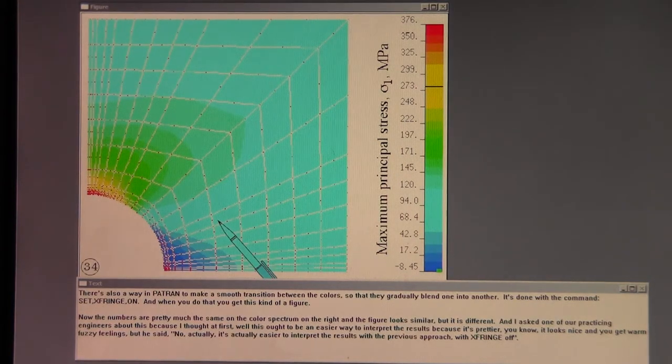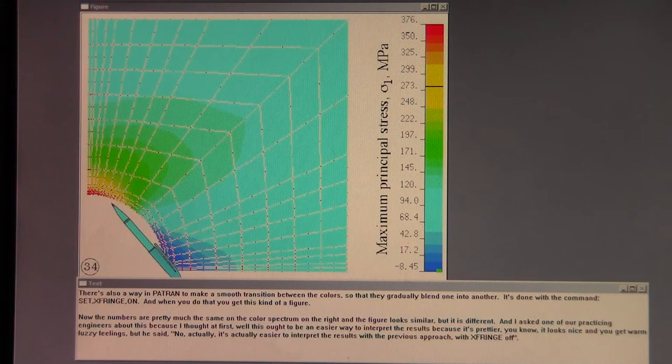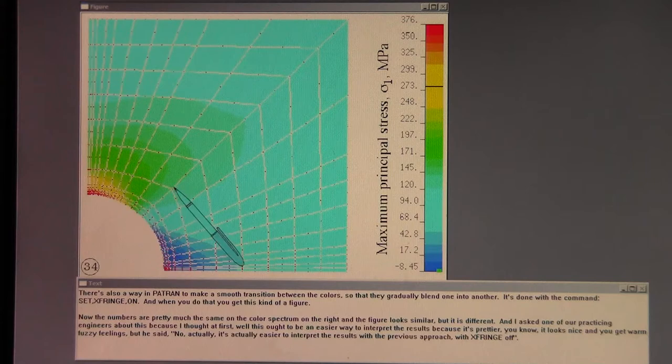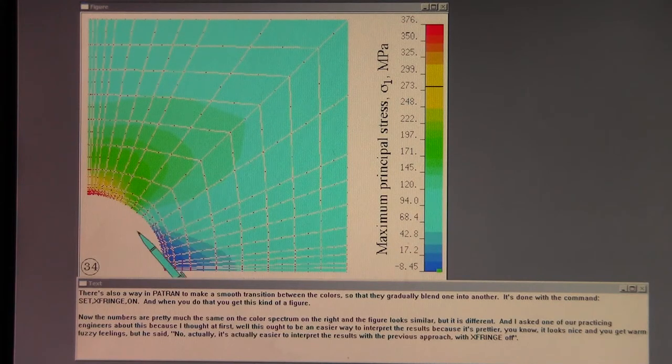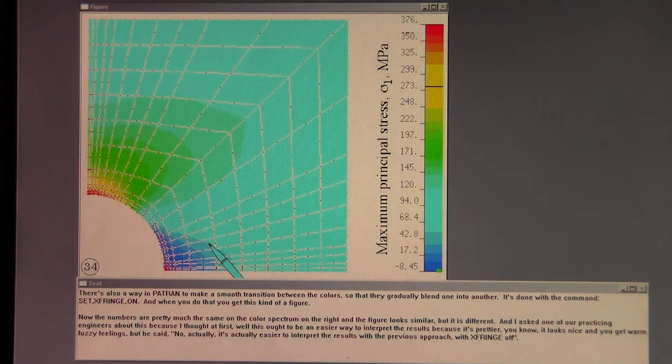Now the numbers are pretty much the same on the color spectrum on the right. And the figure looks similar but it is different. And I asked one of our practicing engineers about this because I thought at first, well, this ought to be an easier way to interpret the results because it's prettier, you know. It looks nice and you get warm fuzzy feelings. But he said, no, actually, it's easier to interpret the results with the previous approach with x fringe off.